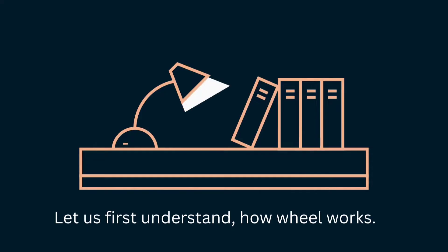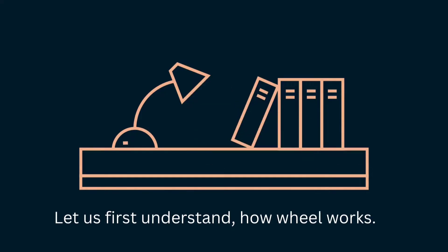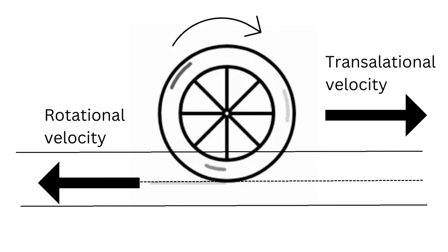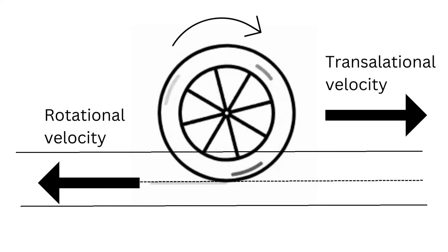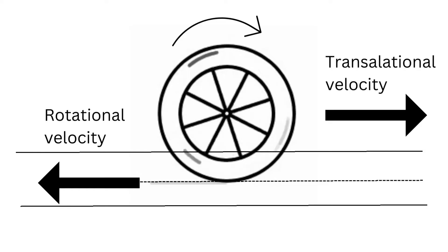Let's first understand how a wheel works. A moving wheel has two different types of velocities, one is the rotational velocity and the other is the translational velocity. These both velocities are equal in magnitude but are opposite in direction, hence they cancel each other.